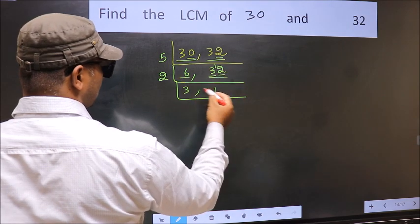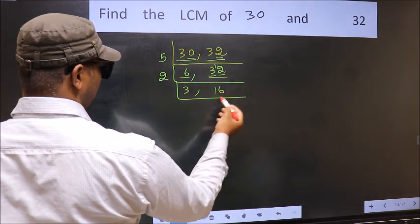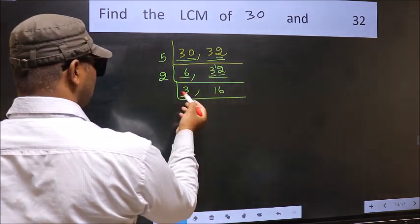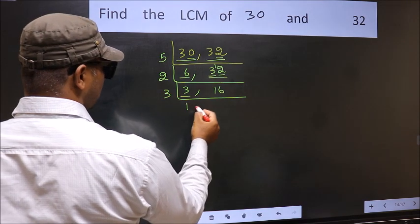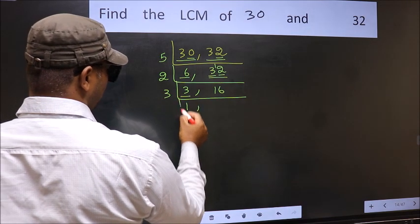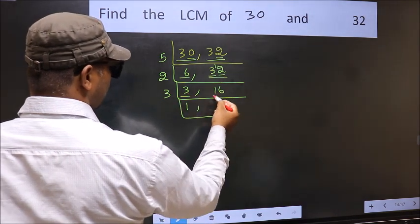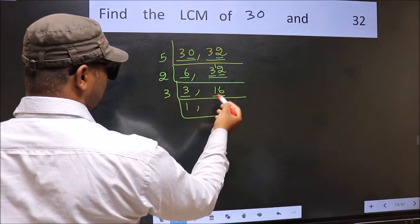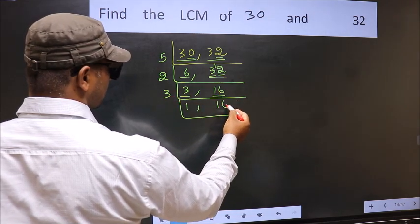When do we get 12 in the 2 table? 2 times 6 is 12. Now here we have 3. 3 is a prime number, so 3 times 1 is 3. The other number is 16, which is non-divisible by 3, so we write it down as it is.